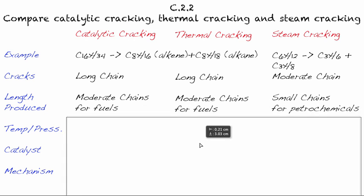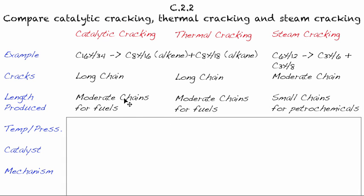They produce moderate chains, and that's what we use for fuels in catalytic cracking. Thermal cracking does the same thing, but steam cracking will give us these small chains. If you look at the formulas here, you'll see that this one is an alkene, and that one's an alkane.